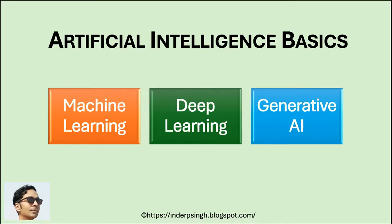Generative AI refers to AI systems that can create new data or content like summaries, articles, and software code. These AI technologies range from simple algorithms in machine learning to complex neural networks that run AI applications.